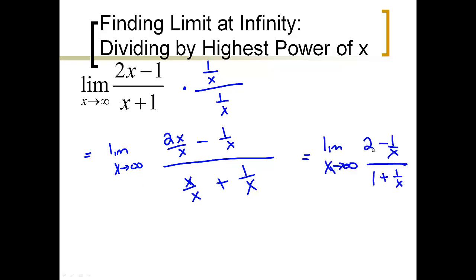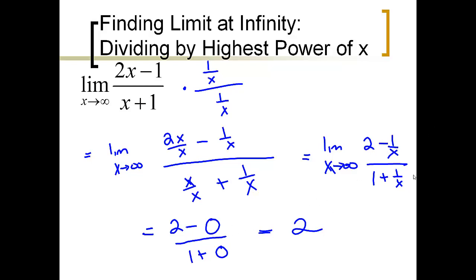The x's cancel out in the numerator and we're left with the limit of 2. The limit of 1 over x as x approaches infinity — by our theorem — is 0. Similarly, in the denominator, the x's cancel to give 1, and 1 over x goes to 0, so we get 1 plus 0. When we simplify, we get 2 over 1, which is 2. You can verify that graphically or numerically. So the limit of this rational function, because we divided each term by x, is 2.